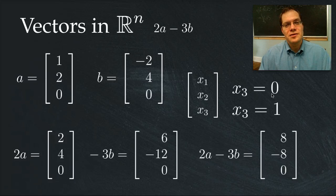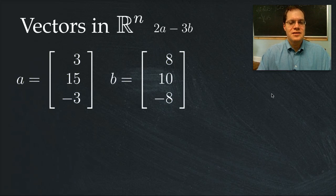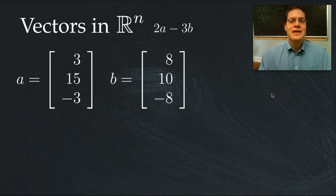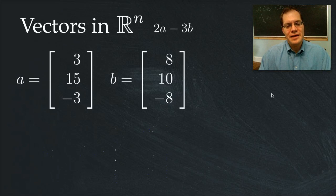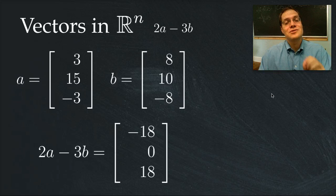Consider these two vectors. Let's go straight to the linear combination, 2a minus 3b. And it equals this. You can verify that the numbers are correct on your own. But now I just want to ask my question.